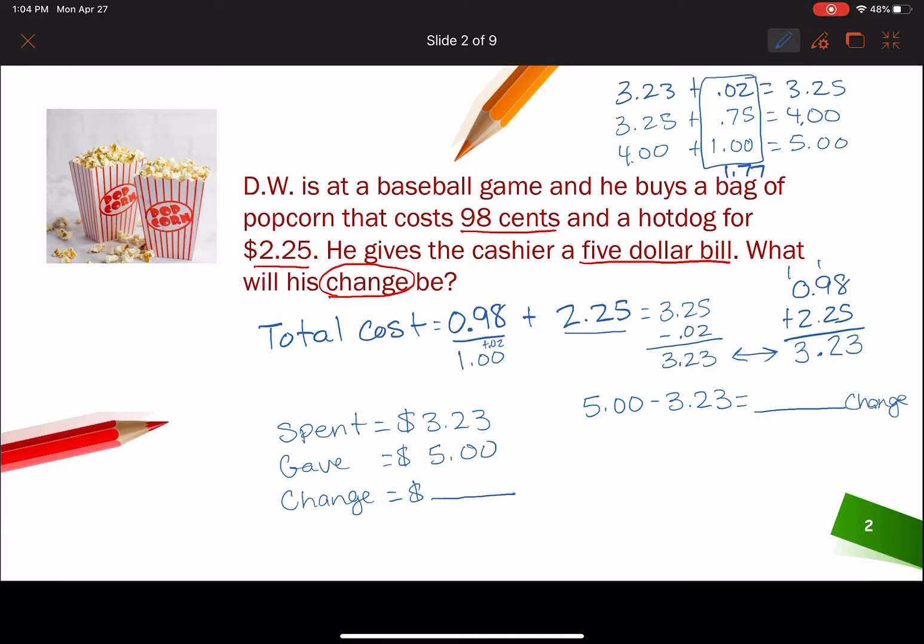I could stack it and subtract that way. Regrouping. I could say 5 becomes a 4. 0 becomes 10. I'm going to borrow one. Becomes a 9. And that one becomes a 10. 10 minus 3 is 7. 9 minus 2 is 7. And 4 minus 3 is 1. Okay, we got that amount.